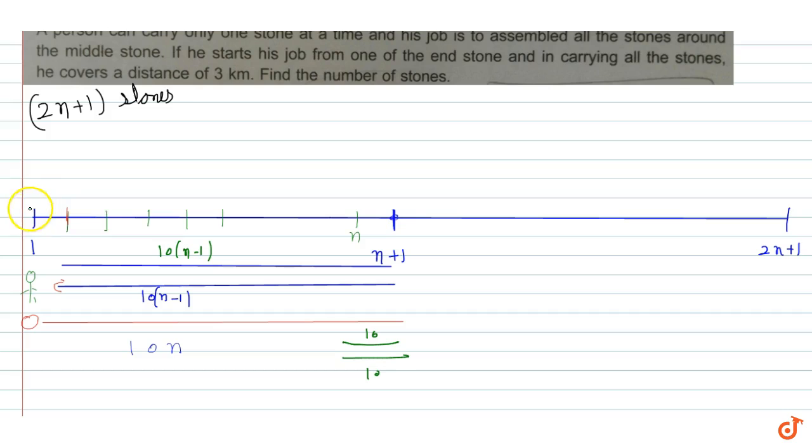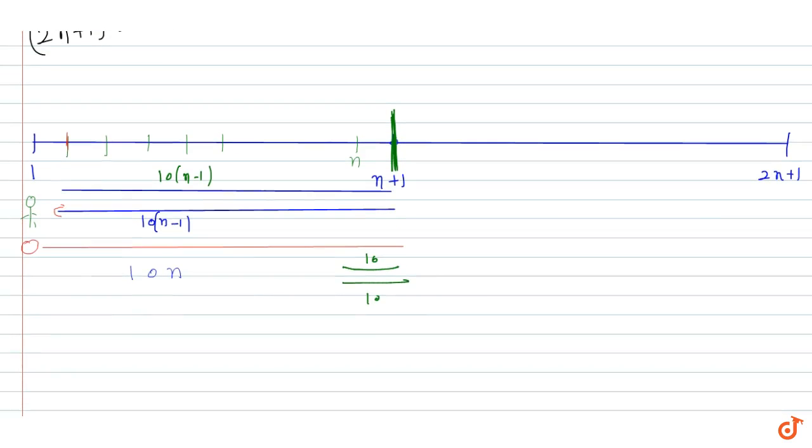Now when the left-hand side is done, he's at the center. For the right side, the total distance sum: first stone takes 2 times 10n, second takes 2 times 10(n-1), and so on.